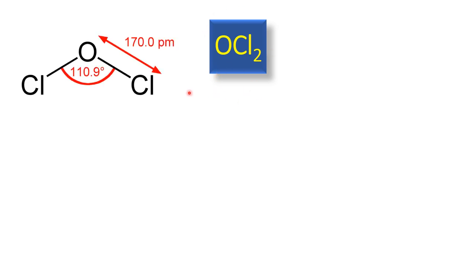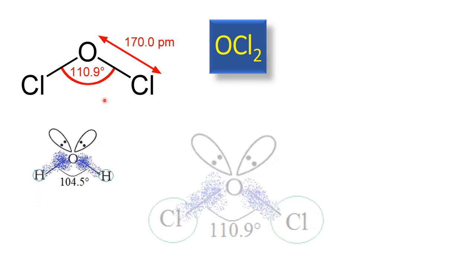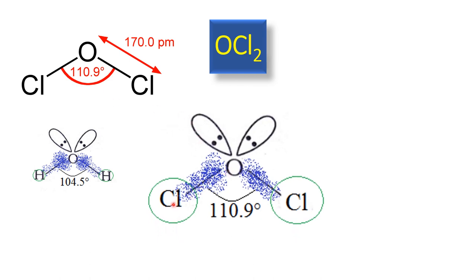Now let us see OCl₂. The logic that comes to mind is that chlorine is also more electronegative than hydrogen, so we would expect a similar trend. But on the contrary, OCl₂ has a higher bond angle than water. The reason is the electron density between the O–Cl bond, which is evenly distributed between the oxygen and chlorine atoms. Furthermore, the size of the chlorine atom is bigger than that of hydrogen or fluorine, and because of this larger size, we see steric repulsion occurring between the larger chlorine atoms.